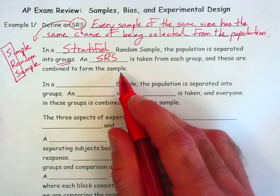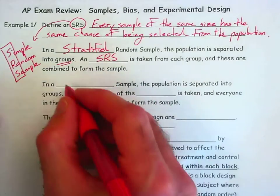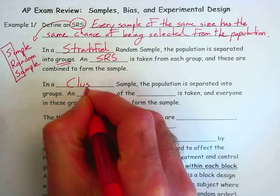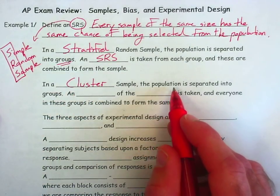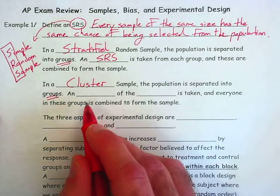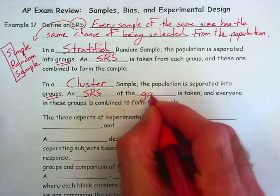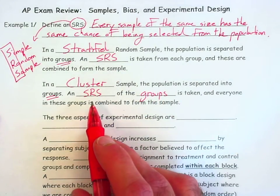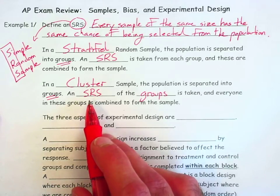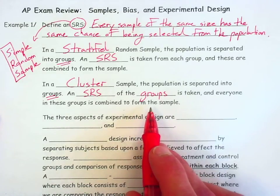Another type of random sample is called a cluster sample. Here, the population is once again separated into groups, but the difference is an SRS of the groups is taken. So once we've broken the population into groups, we take a simple random sample of those groups, and everyone in the selected groups is combined to form the sample.